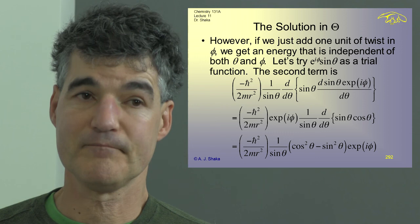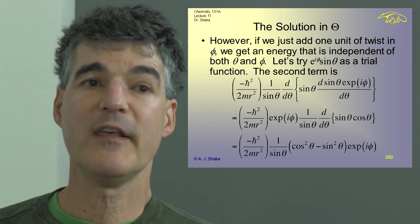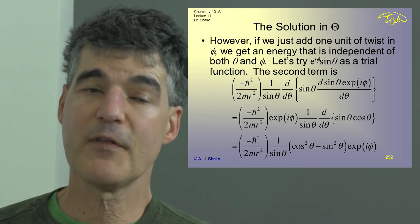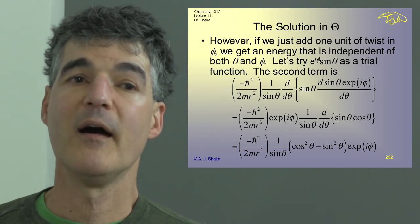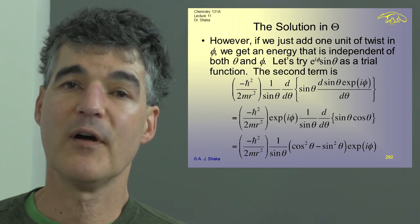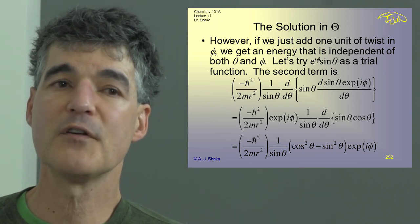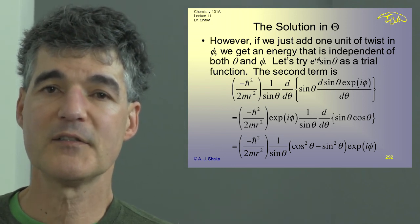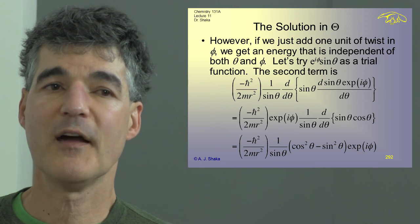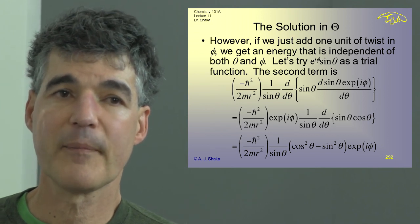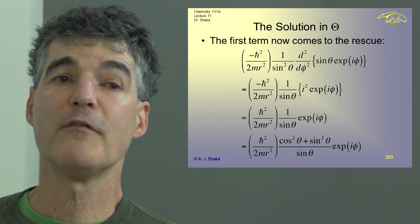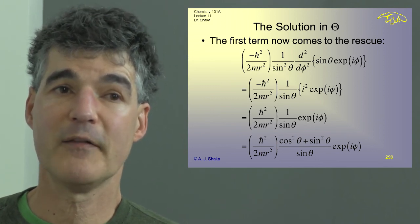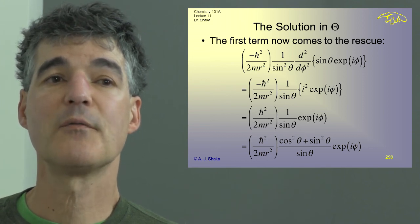We put in E to the i phi times sine theta. The second term from the theta derivative gives exactly the same thing as before with E to the i phi riding along, so I don't have to redo all those derivatives. I can write down 1 over sine theta times cosine squared theta minus sine squared theta, all times E to the i phi, with constants out in front. Now, however, for the phi part — the second derivative — I get something because I have a phi in there, and that actually comes to the rescue.